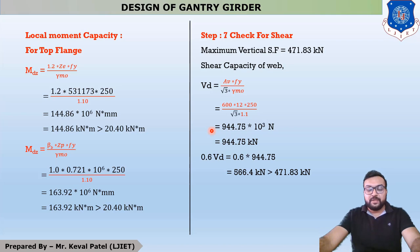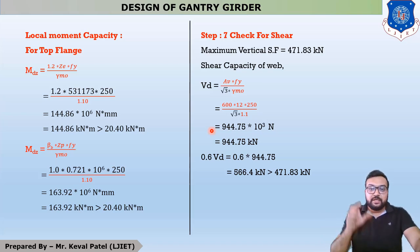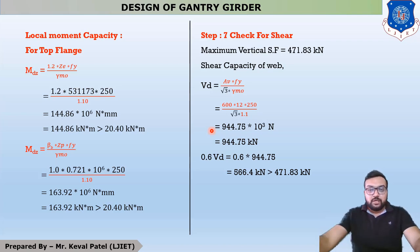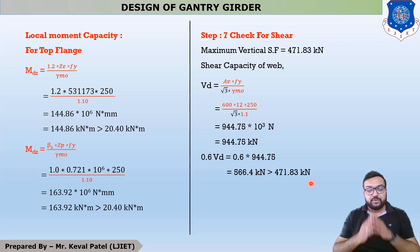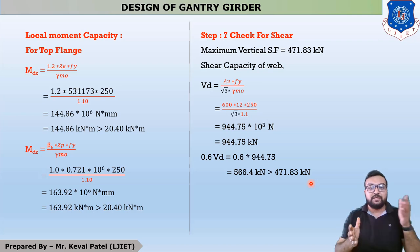On page 53, it is mentioned that Vd should not exceed 0.6 Vd. Multiplying by 0.6, the answer is 566.4 kN. Since 566.4 kN is greater than 471.83 kN, the selected section is safe in shear as well as in bending moment.